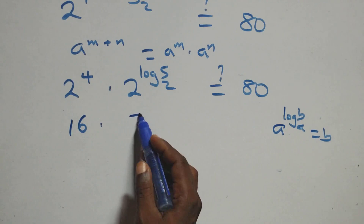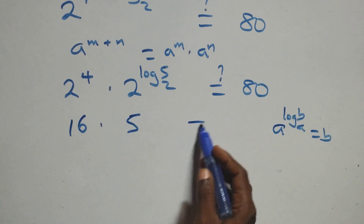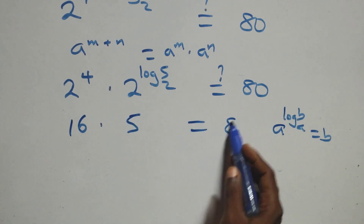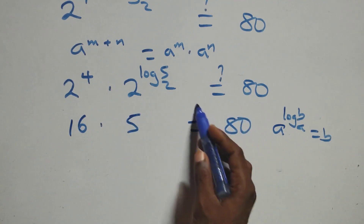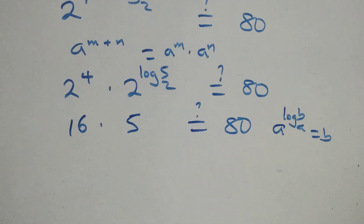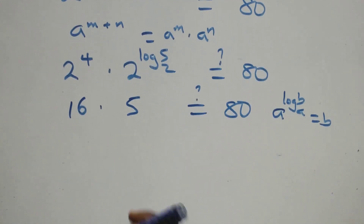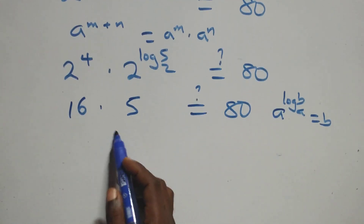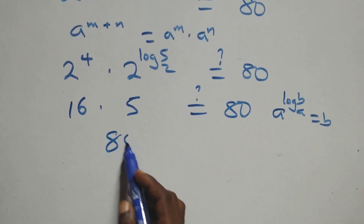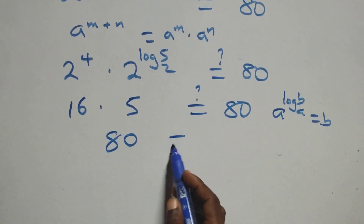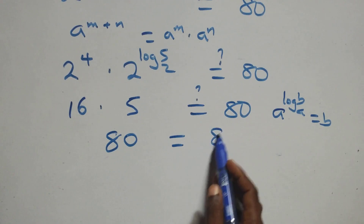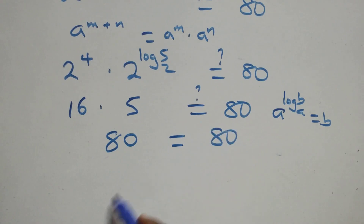Here, 2 raised to power log₂ 5 equals 5, so we have 16 times 5, which equals 80, and that is equal to 80 on the right-hand side.